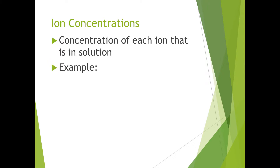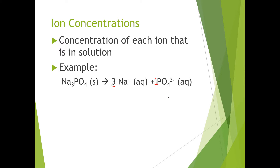Here's a quick example of how to calculate ion concentration. Let's take the compound sodium phosphate and dissolve it. When you dissolve sodium phosphate, it dissolves into three sodium ions and one phosphate ion. So if I take one mole of sodium phosphate and dissolve it, I get three moles of Na⁺ and one mole of phosphate ions.